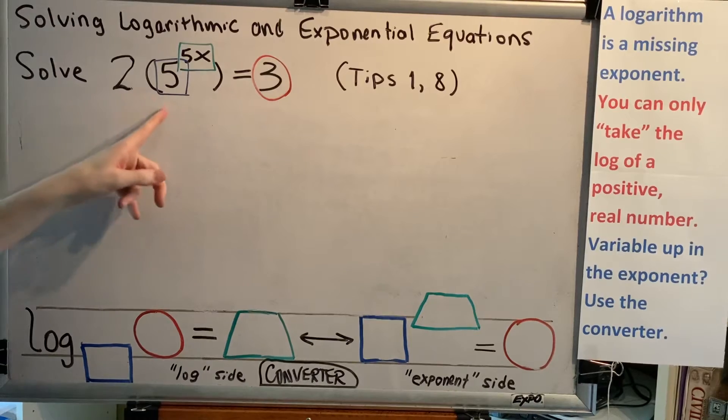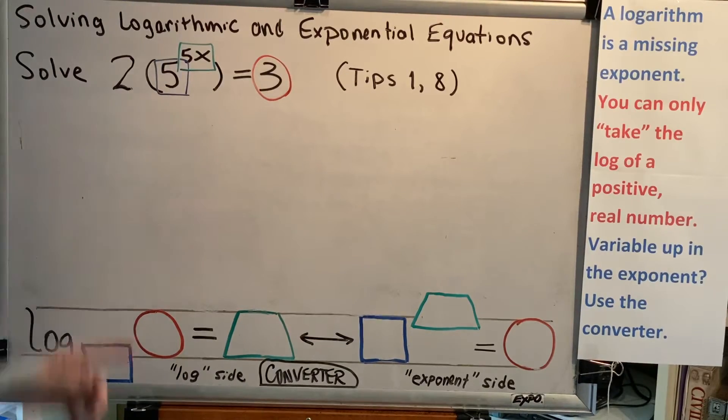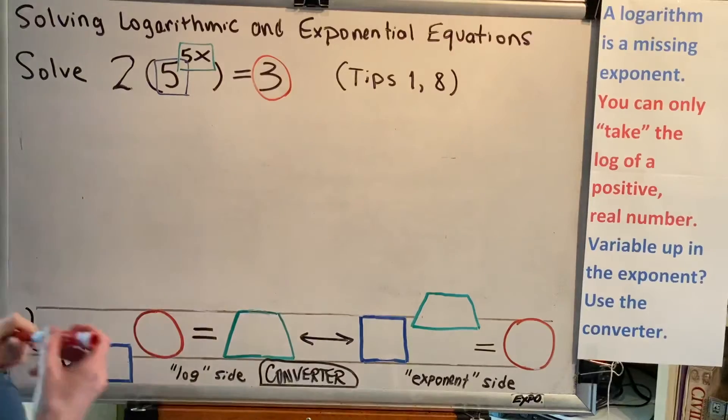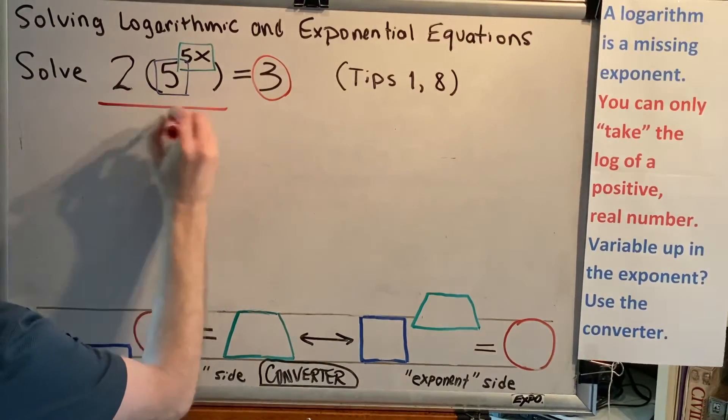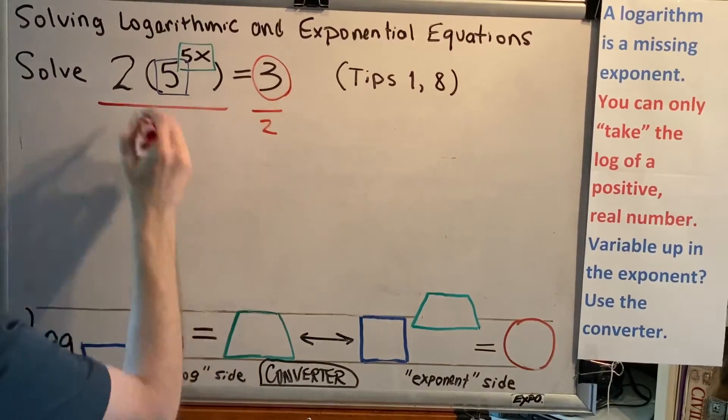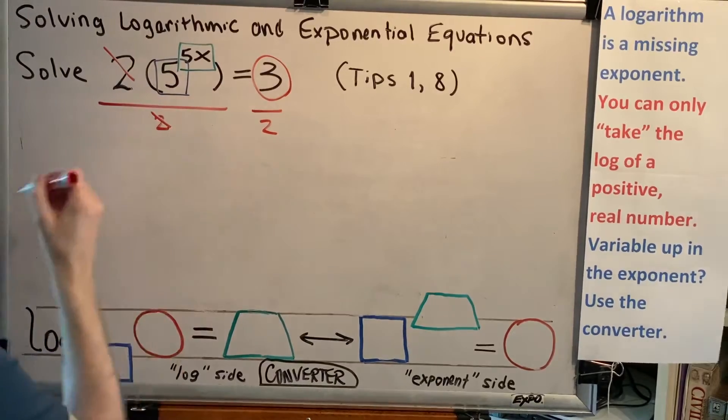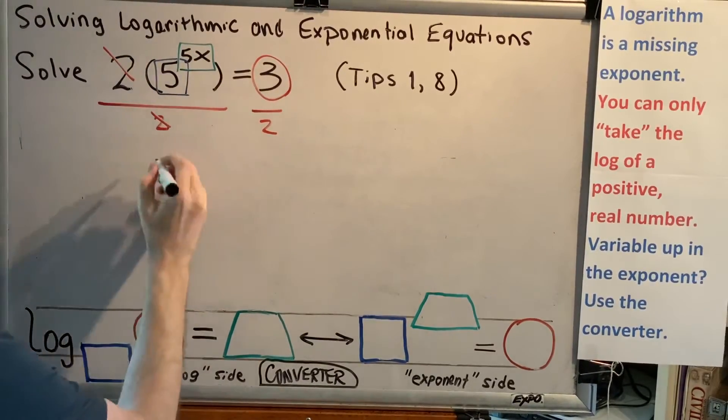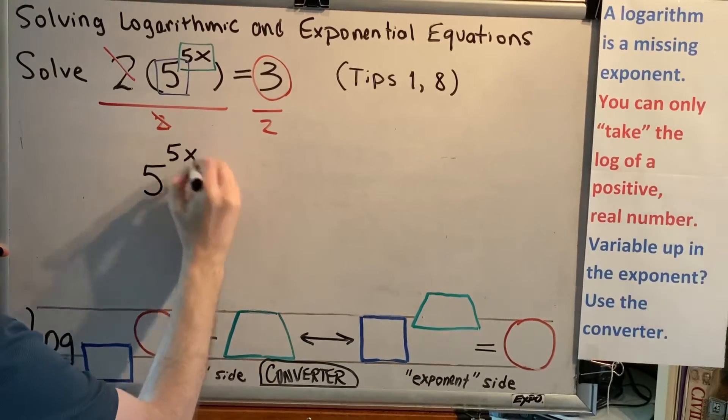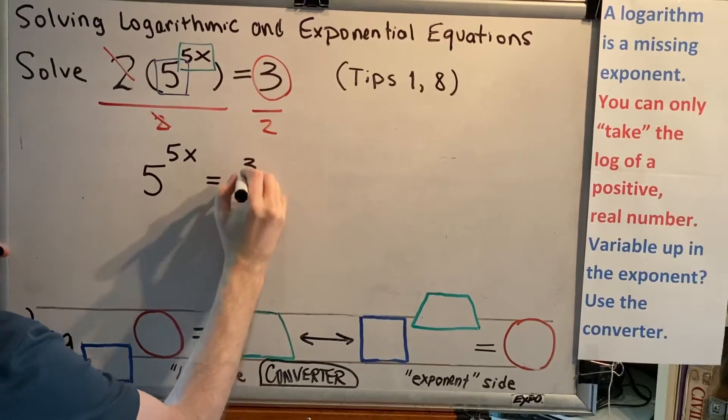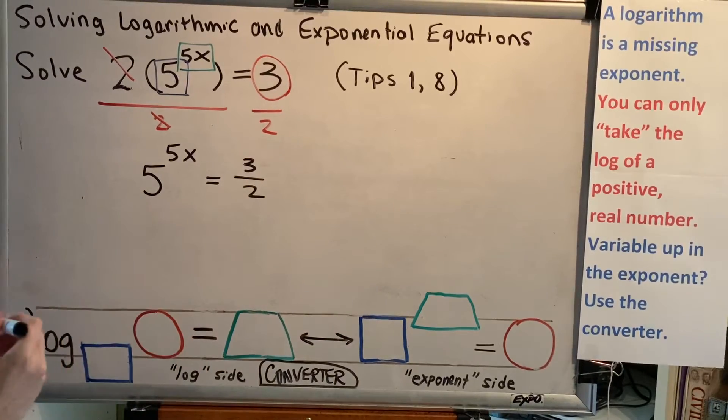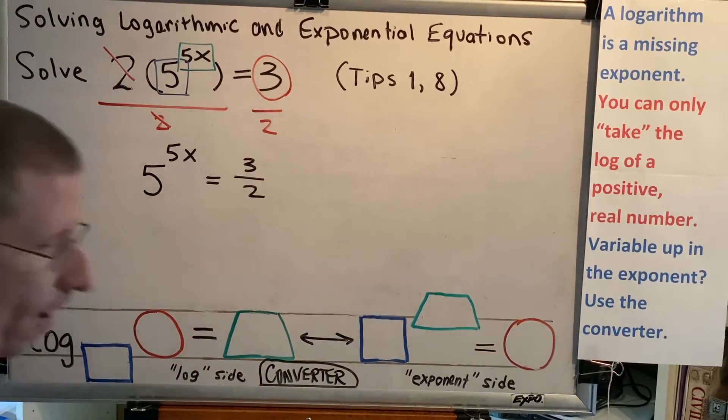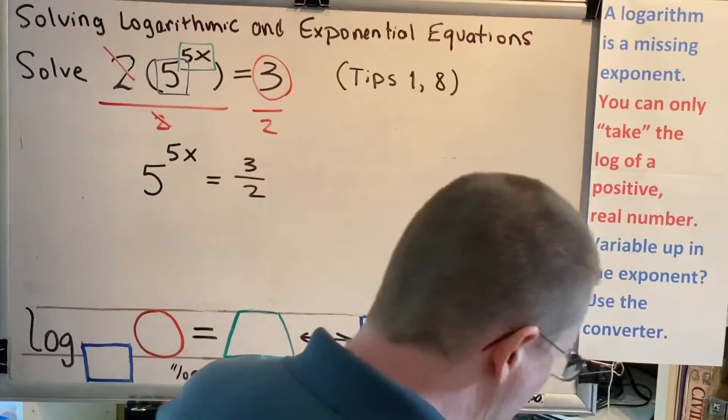Well, the 2 is multiplying by our exponential. So if we do the opposite, divide, that should allow us to achieve our goal. So let's divide both sides by 2. These 2's cancel to the number 1. Anything times 1 is itself. Anything divided by 1 is itself. So on the left, we now have 5 to the 5x power. On the right, we now have 3 halves.